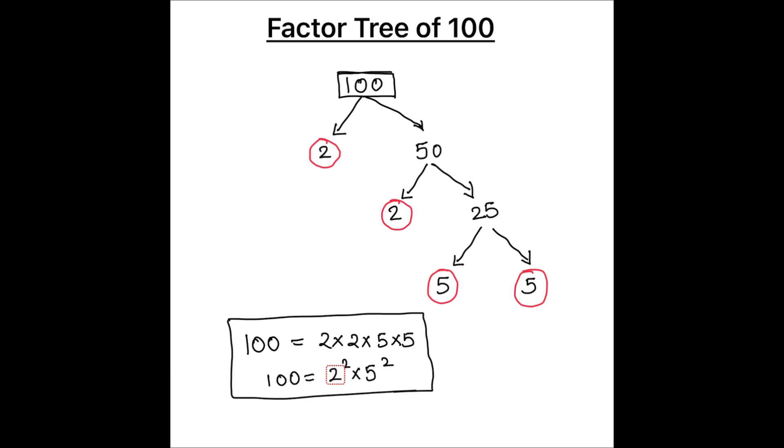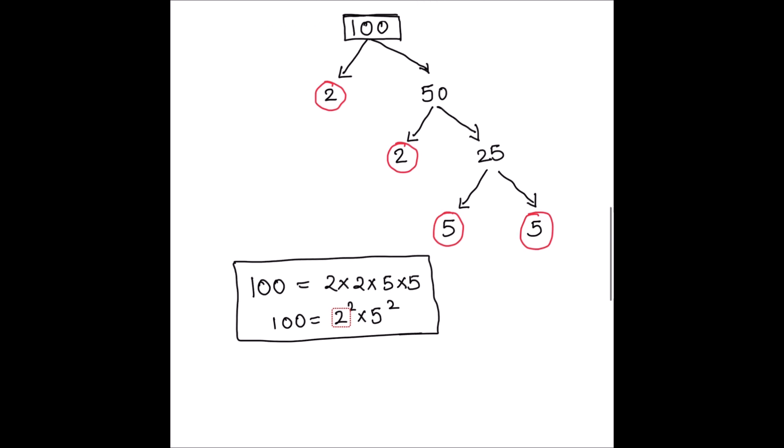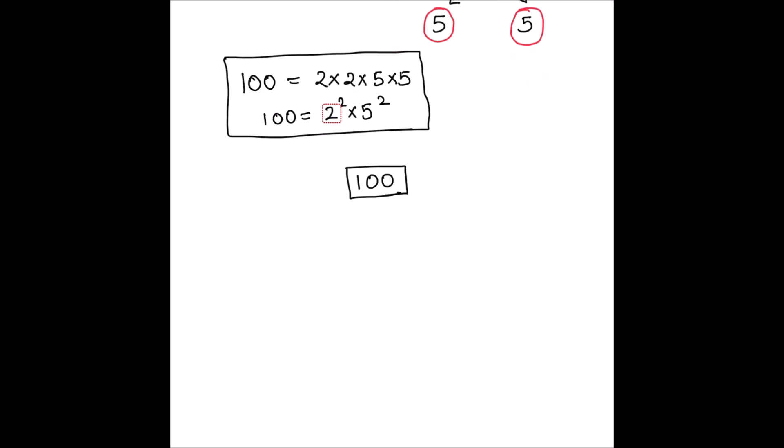Let's try making another factor tree for number 100. This time, let's break 100 into two factors which are 10 and 10 — ten times ten is one hundred.